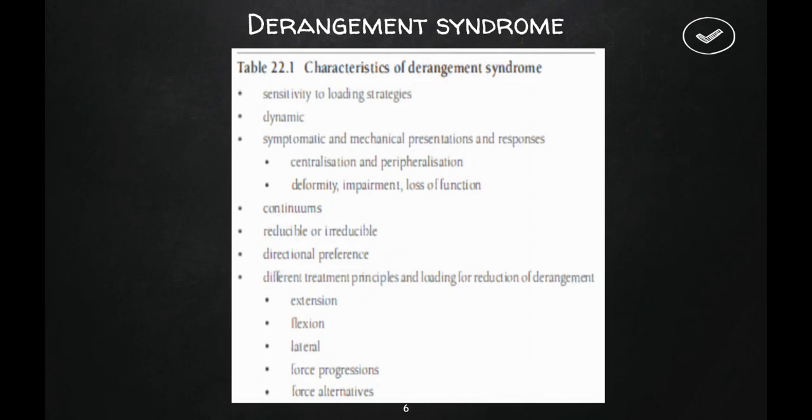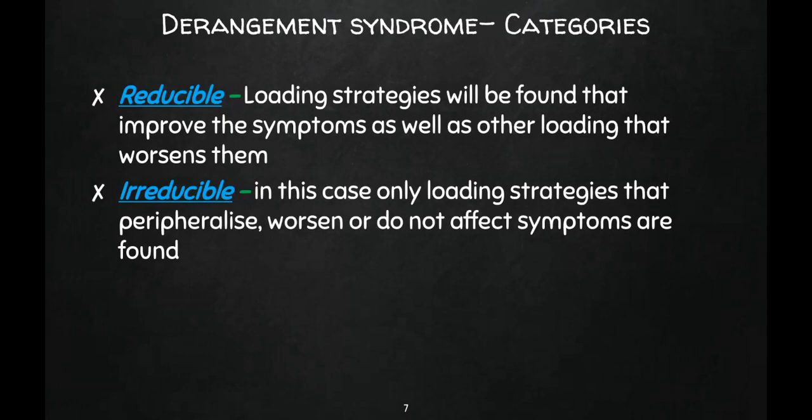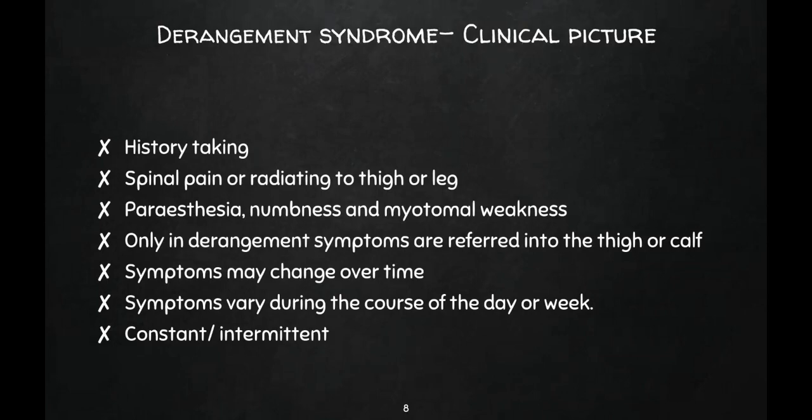Broadly, derangement syndrome is categorized into two types: reducible and irreducible. In reducible derangement, loading strategies are found that improve symptoms, as well as loading that worsens them — one particular movement aggravates pain and the opposite movement relieves it. In irreducible derangement, only loading strategies that peripheralize or do not affect symptoms are found — we cannot identify a particular loading strategy that can centralize the symptoms.